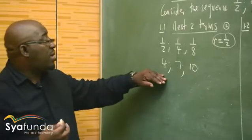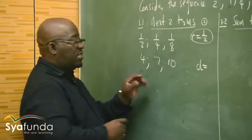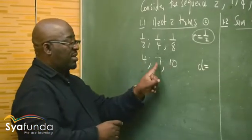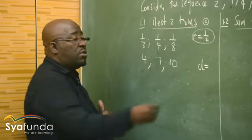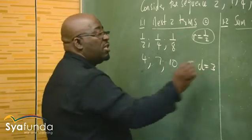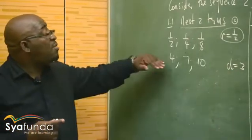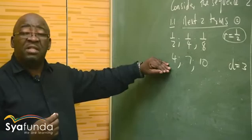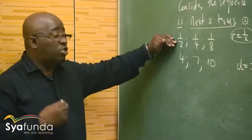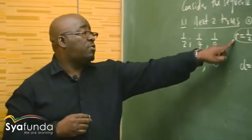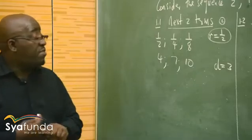This one has a common difference d. What is the common difference here? Ten minus seven is three. Seven minus four is also three. This one has got a common difference of three. Meaning that here we're given the arithmetic sequence and there we're given the geometric sequence — with a common ratio of 1/2 and a common difference of three.